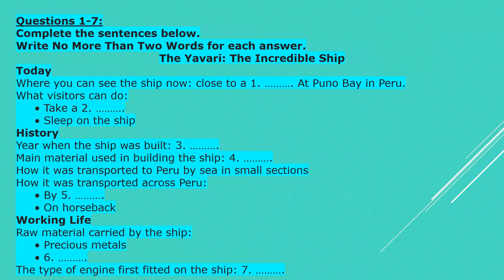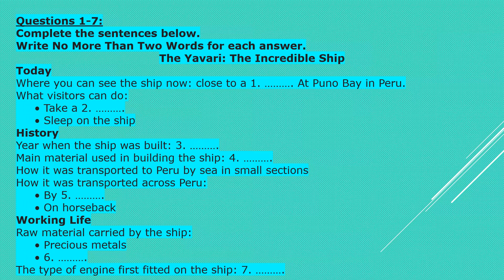Good evening. Today I am going to tell you an amazing story about the remarkable ship called the Yawari. If you go to Lake Titicaca in Peru, which lies 3,800 meters above sea level in the Andes Mountains, you can see the Yawari in Punu Bay near to the big hotel. The boat is open to visitors every day and a guided tour is available. You can even stay overnight on the boat floating at the world's highest navigable waterway. The rotting remains of the ship was found in Punu in 1983. People believed it was built in Glasgow, Scotland in 1905, but research has shown that it was actually constructed in the city of Birmingham, England in 1862.